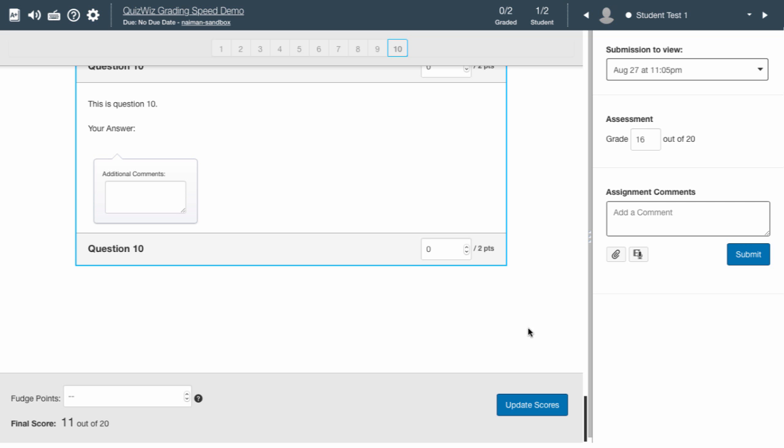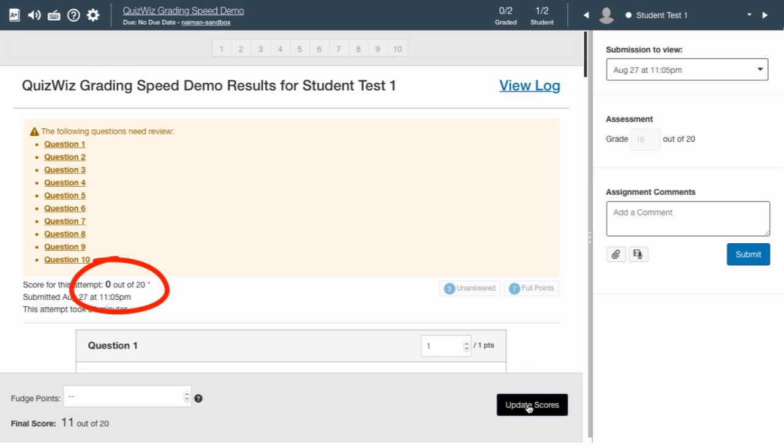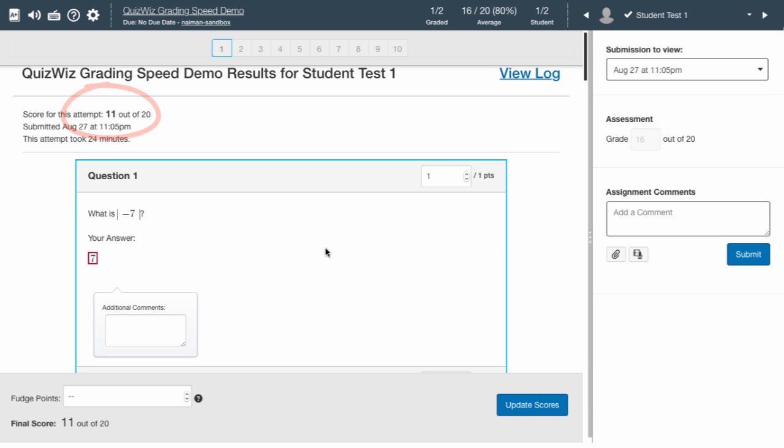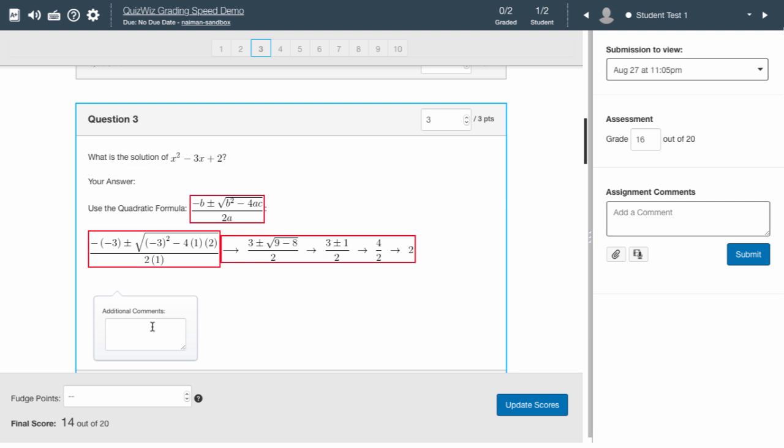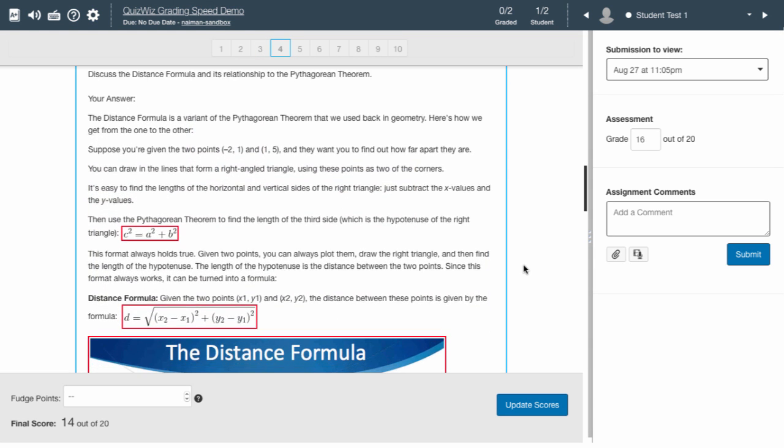Don't forget to update the scores before moving on to the next student. Overall, instead of 22 clicks using SpeedGrader, QuizWiz required only 7 clicks to set the final score to 11 points. Furthermore, typing in comments was more convenient, and scrolling was minimized.